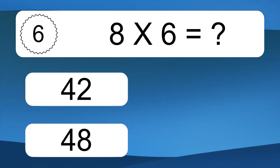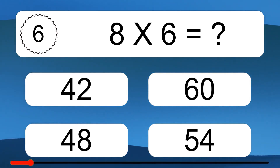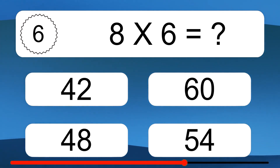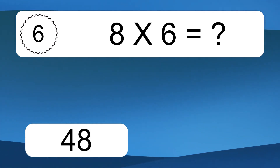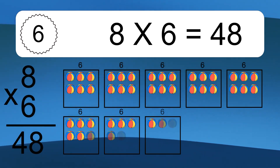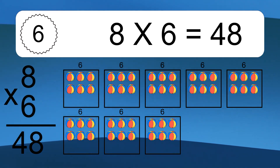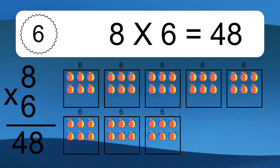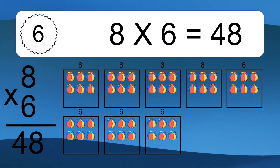Eight times six equals what? Eight times six equals 48. We have eight boxes, and each box has six colorful balls inside. If you count all the balls in all the boxes together, you will have eight times six balls. This equals 48 balls.